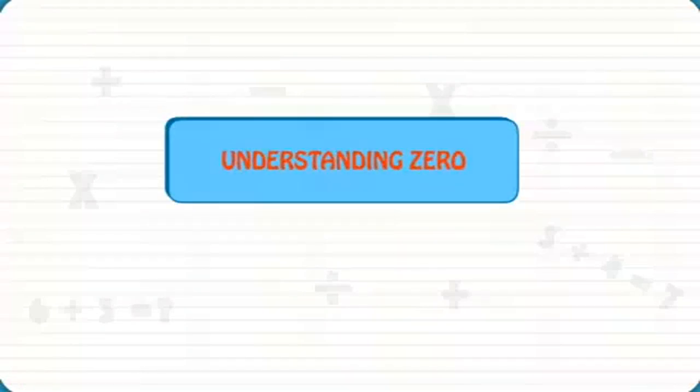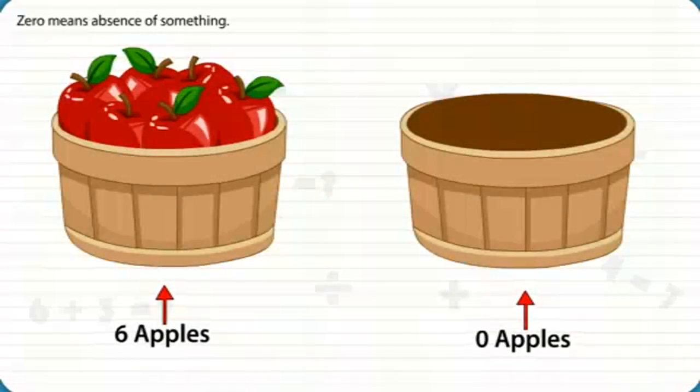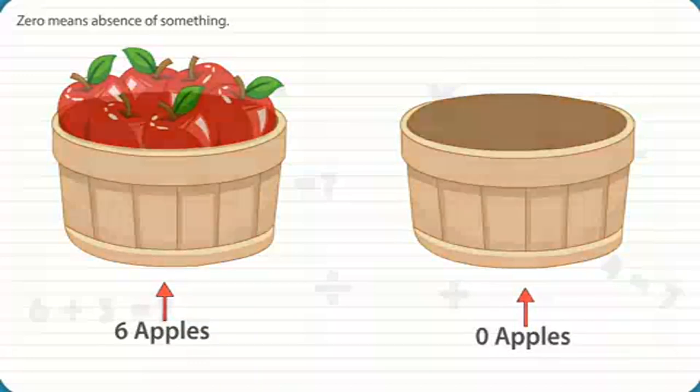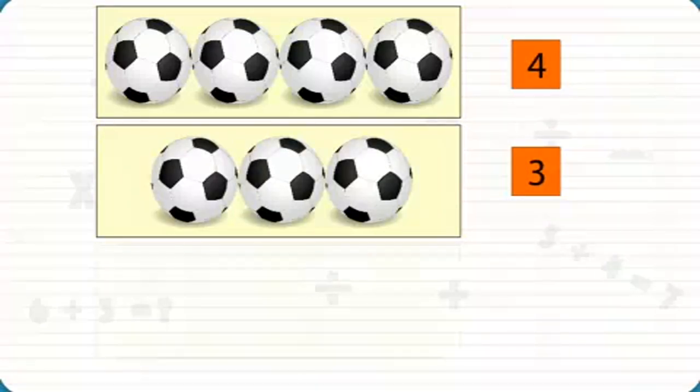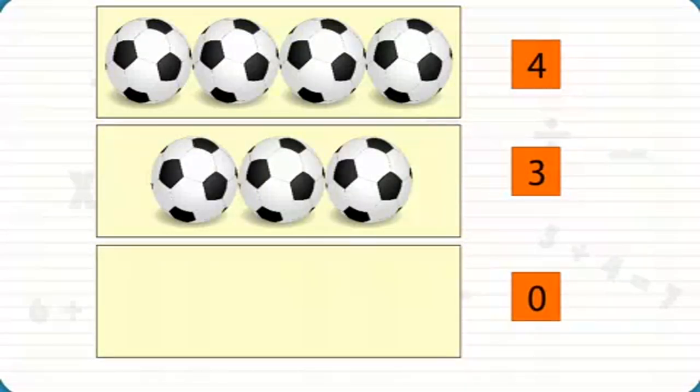Understanding Zero. Zero means absence of something. For example, there are four footballs. There are three footballs. There are no footballs, or we can say zero footballs.